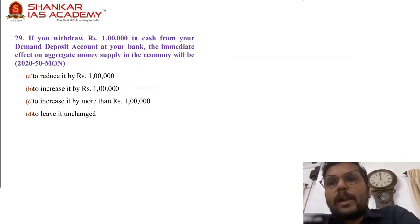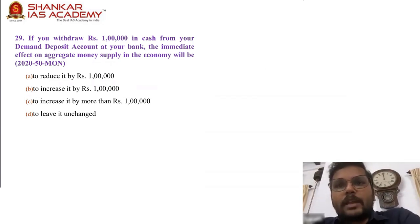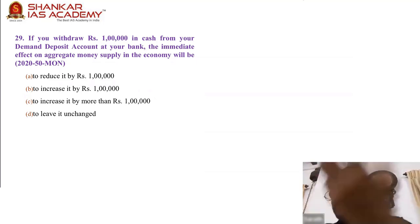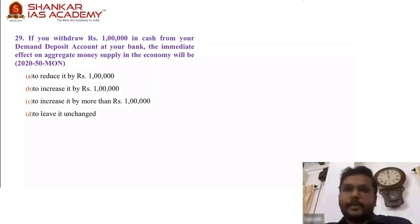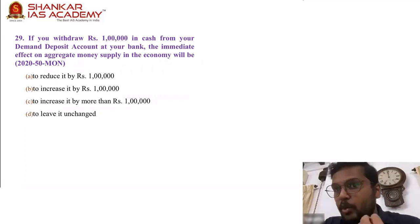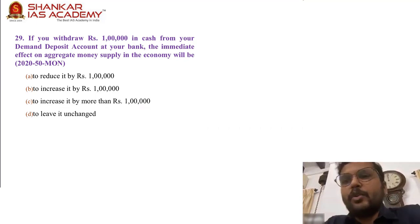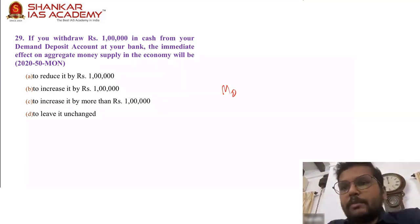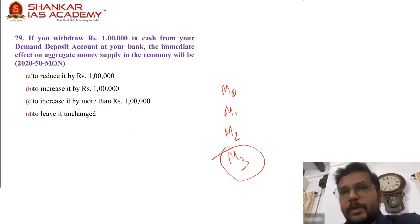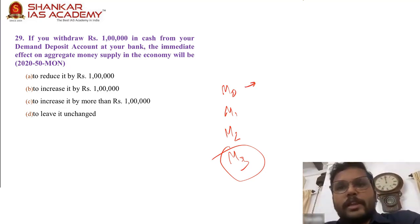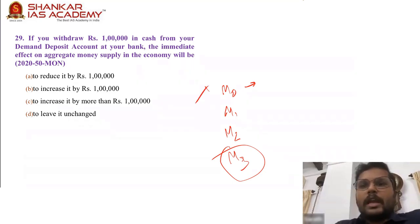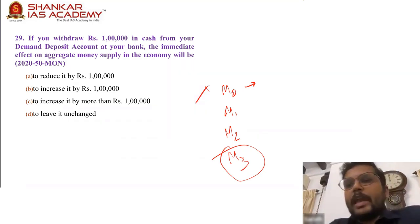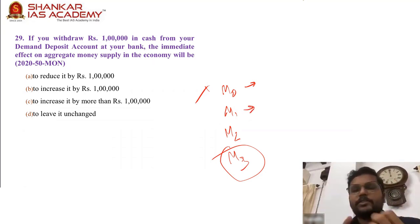Question 29: If you withdraw 1 lakh rupees in cash from your demand deposit account at your bank, the immediate effect on aggregate money supply in the economy will be — this is a question on monetary aggregates, an application level question. M3 is what is referred to as aggregate money supply — total money supply in the economy, which should ideally equal the GDP of the country. M0 is the total printed currency. The question is not about M0. M1 refers to money in the country but not accessible for a bank to use for lending purposes.